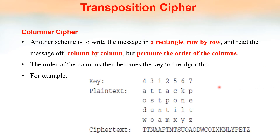See this example. The plaintext message is 'attack postponed until 2 AM XYZ.' It is written row by row in 7 columns. While encrypting, the order of the columns is changed — the third column becomes the first, the first column becomes the fourth, and so on. These order changes form the key to the algorithm.